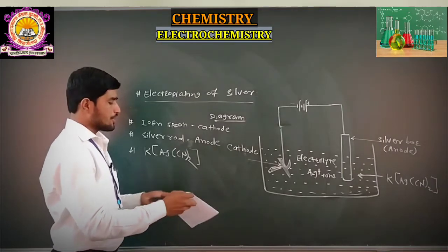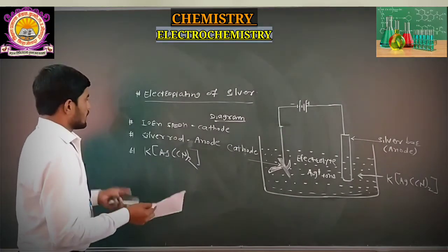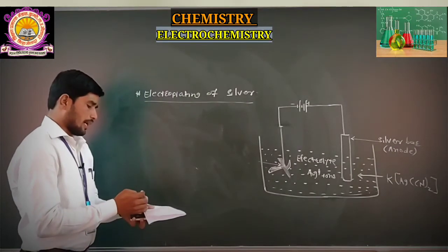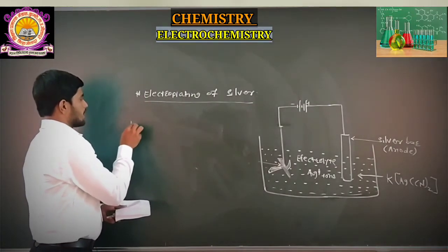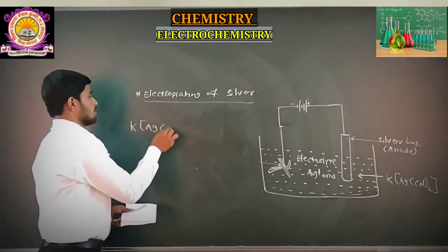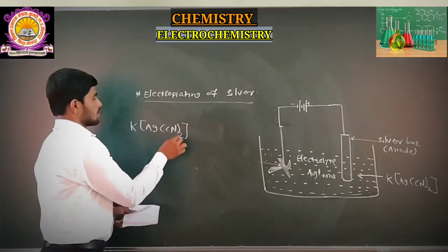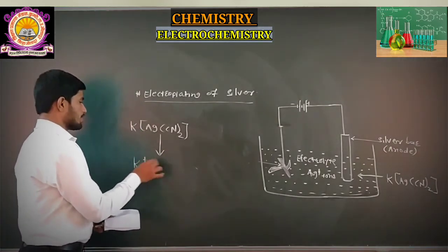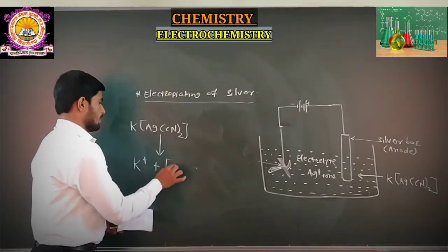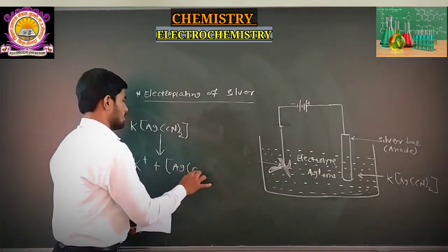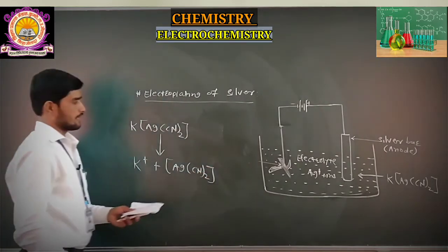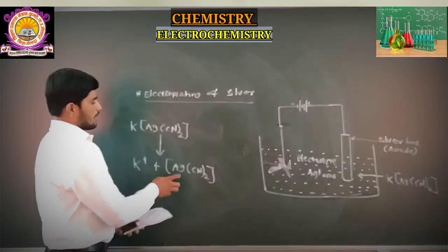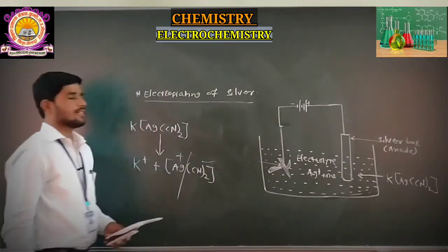First, the ionization process takes place. The electrolyte KAg(CN)₂ — potassium argentum cyanide — dissociates: K⁺ is separated from Ag(CN)₂⁻. Again, this Ag(CN)₂⁻ further dissociates so that Ag⁺ is separated and CN⁻ is separated. This type of dissociation process takes place in the electroplating process.